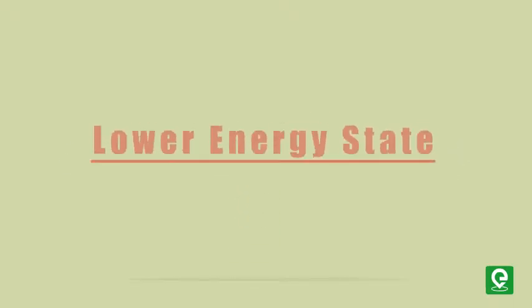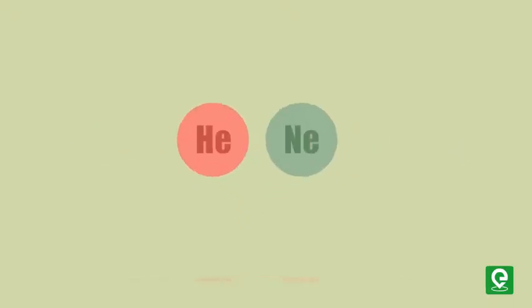Stability in the chemical world means attaining a lower energy state. The group eight elements of the periodic table, like helium and neon, do not require bonding with other elements to attain stability. These are called inert elements.